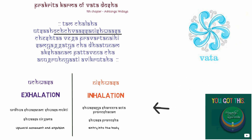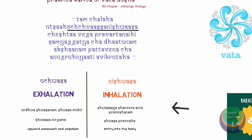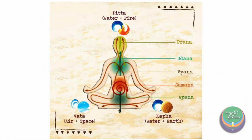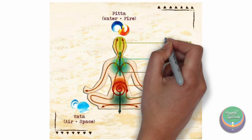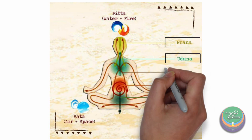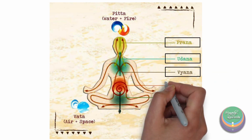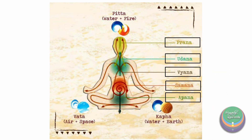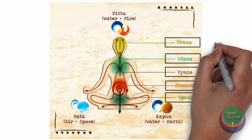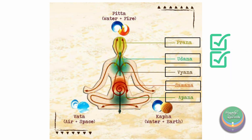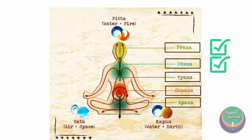Vata-Dosha, on the basis of functions, has been classified into five types in Ayurveda. They are Prana, Udana, Samana, Vyana, and Apana. Among these, Prana and Udana are most influential for respiration.